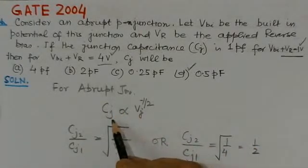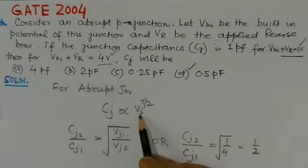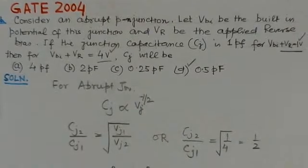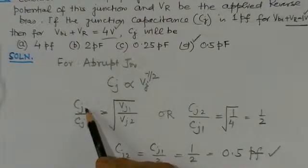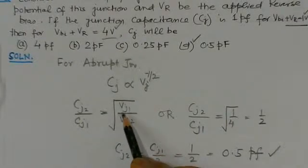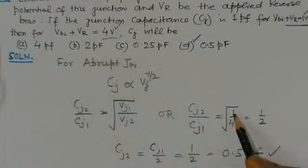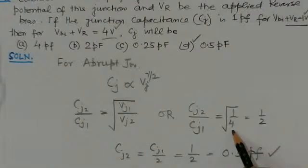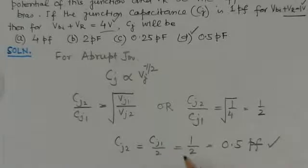For an abrupt junction, the junction capacitance is proportional to VJ to the power of minus one-half. We can find the relation C_J2 over C_J1 equals the square root of VJ1 over VJ2. Here VJ1 is 1 volt and VJ2 is 4 volts. So C_J2 equals C_J1 divided by 2, which is one-half of C_J1.